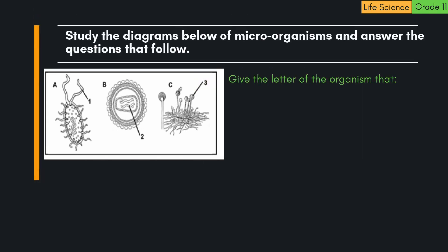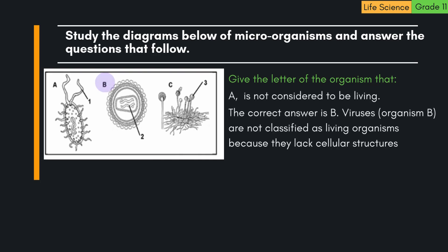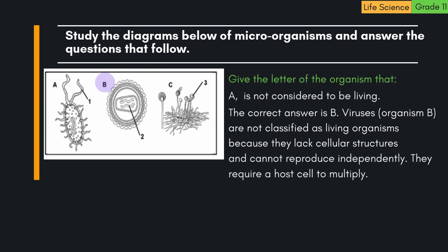Question: Give the letter of the organism that is not considered to be living. The correct answer is B. Viruses, organism B, are not classified as living organisms because they lack cellular structures and cannot reproduce independently — they require a host cell to multiply.